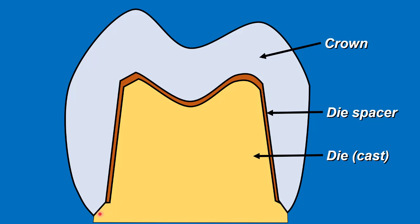This diagram shows us why we leave one millimeter or less at the finishing line. The die spacer acts to compensate for the cement after cementation of the restoration. If there was continuation of this gap to the finishing line, meaning there will be a gap between the end of the crown and the finishing line. This will lead to dissolution of the cement, forming a gap which will be filled by food and future caries. Therefore, it is very important that the end of the crown sits directly on the tooth surface with no spaces.